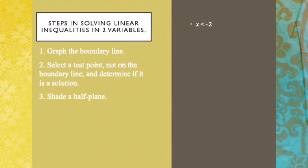The steps in solving linear inequalities in two variables are: Step 1, graph the boundary line. Step 2, select a test point not on the boundary line and determine if it is a solution. If it is a solution, shade that side of the line. If it is not a solution, shade the opposite side.